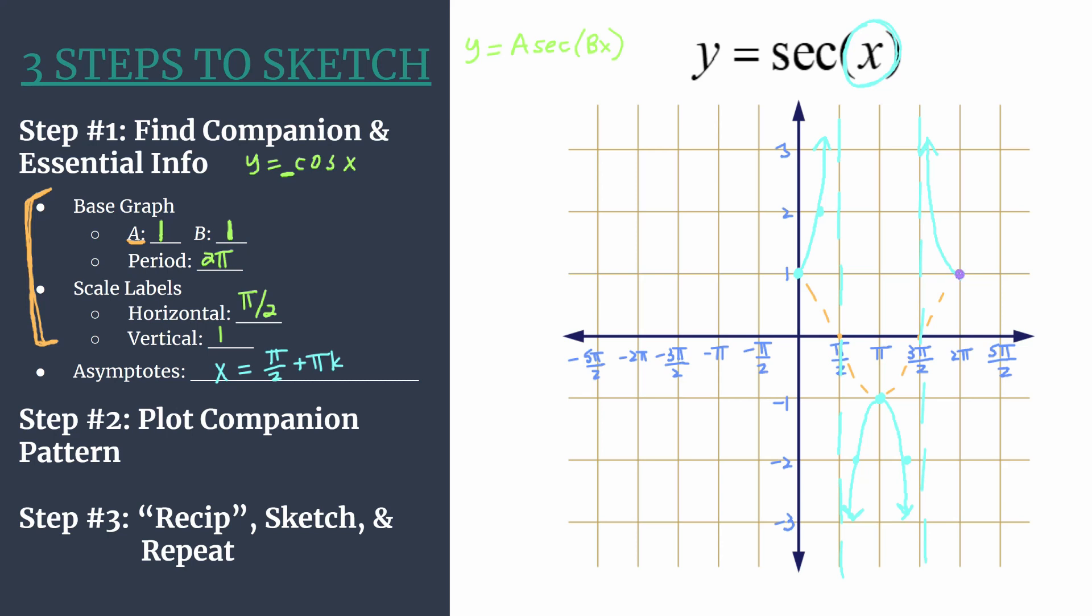So starting here, we can work our way in the positive direction. You see another asymptote happens at five pi over two. Notice we had talked about earlier, there should be asymptotes at pi over two and three pi over two, we see those forming.